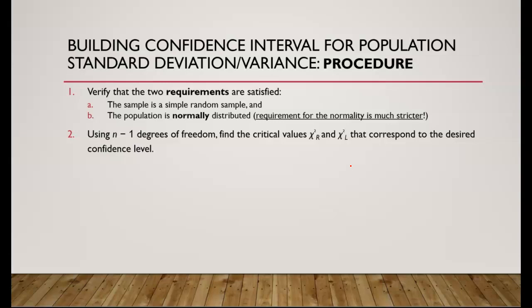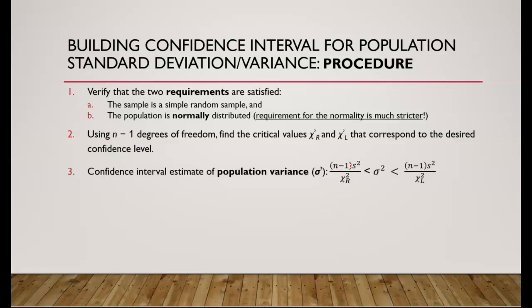Second step: using the degrees of freedom n minus 1, find the critical values chi-square right and chi-square left that correspond to the desired confidence level. Step 3: write the confidence interval estimate of population variance using the chi-square right and chi-square left critical values and the formula. We'll use this formula to build a confidence interval manually, and then I'll show you how to use StatCrunch and TI-84 graphing calculator to build the confidence interval estimate for population variance and population standard deviation.